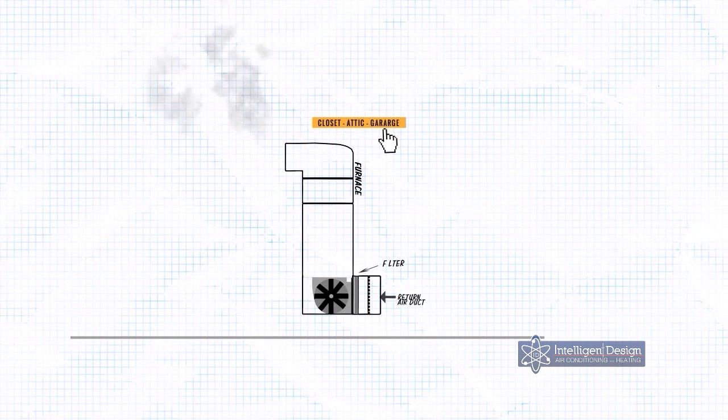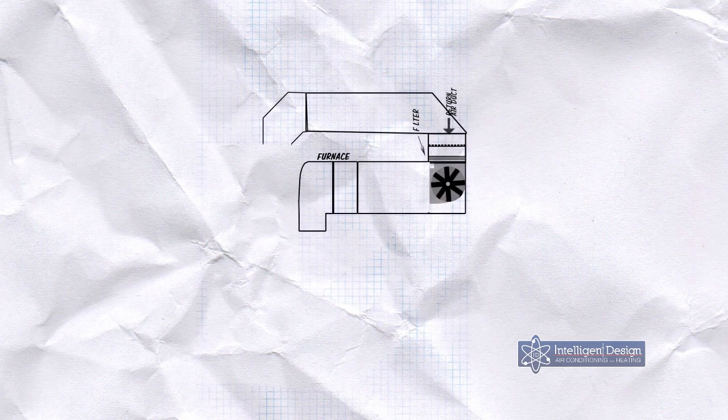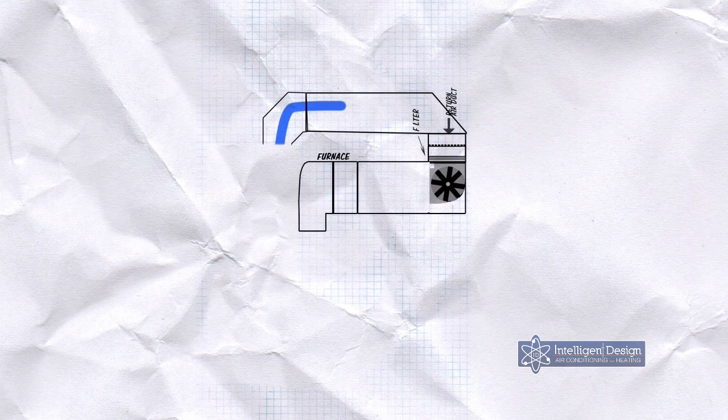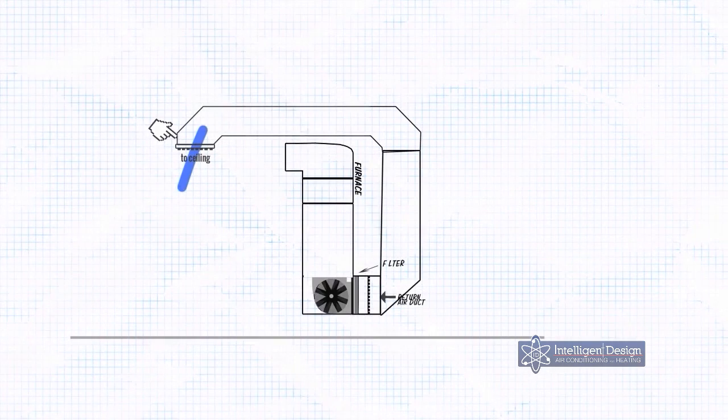If your furnace or air handler is in the attic, just imagine this example laying on its side horizontally in the attic. If you have this application, you will know it because you have no unit in the garage or closet, and your filter is typically in the ceiling. In each application, you are pulling air from underneath the furnace, in through the system, and then returning it back into the house.